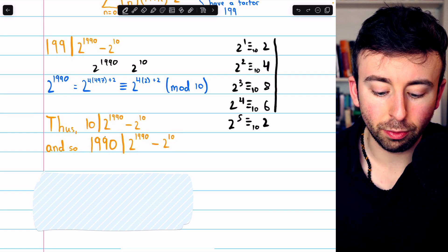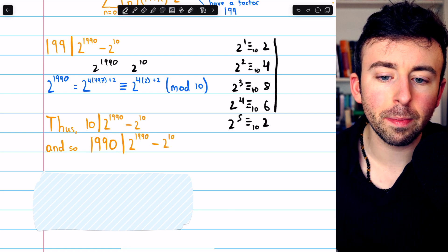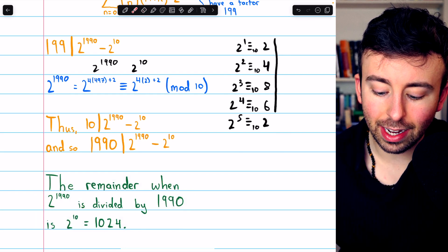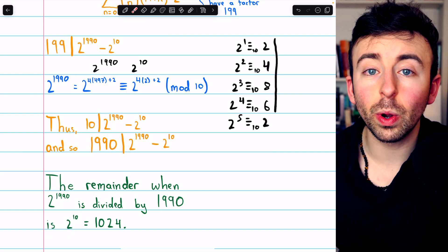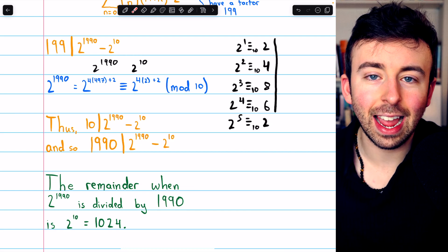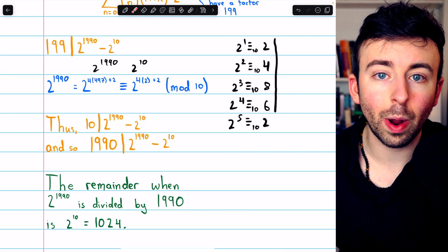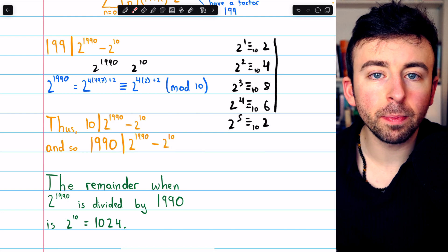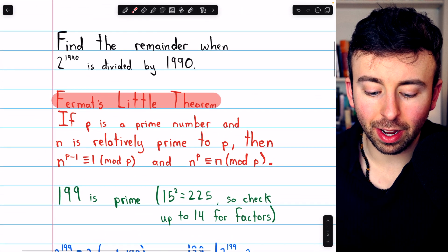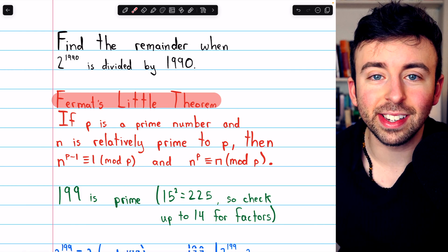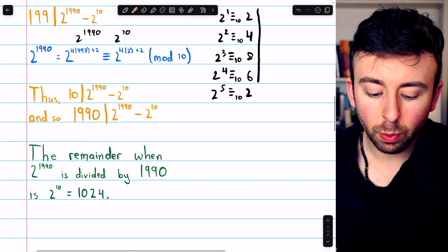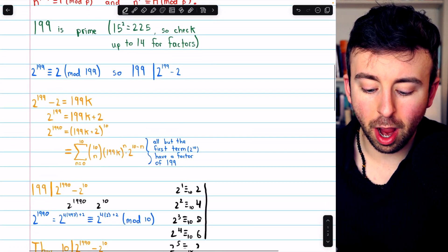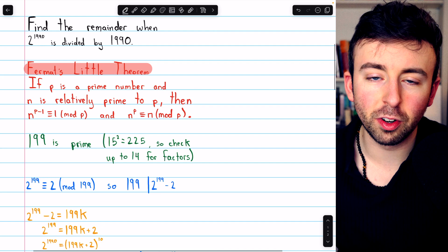Now, it could be that 2 to the 10 is bigger than 1990. And so, in fact, the remainder is some smaller number. But we can quickly check that's not the case. The remainder, when 2 to the 1990 is divided by 1990, is 2 to the 10. A quick calculation shows 2 to the 10 is 1024. You could find that as just 32 squared. So, yes, that is the remainder. Again, that's because this difference is clearly a multiple of 1990. And then the number we're actually interested in is just 2 to the 10 more than that. It's 2 to the 10 more than a multiple of 1990, which means its remainder, after division, is 2 to the 10. So that's a solution to this interesting math problem involving the remainder of a very, very large division problem.